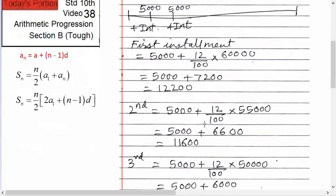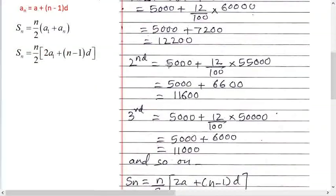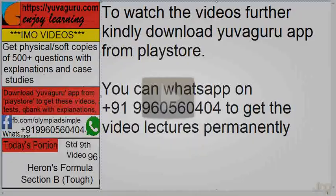The second installment will again be 5,000 as principal. The interest will now be on 55,000, calculated as 12 upon 100 into 55,000, because 60,000 minus 5,000 already paid equals 55,000. So the second installment is 5,000 plus interest on 55,000.